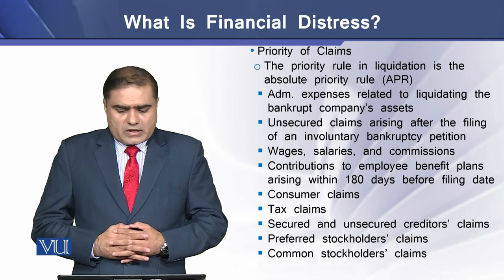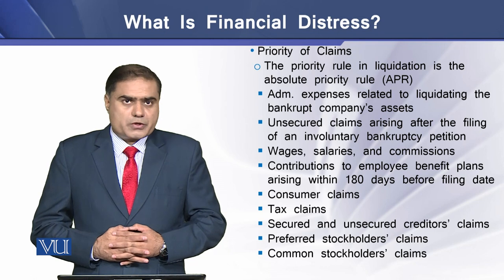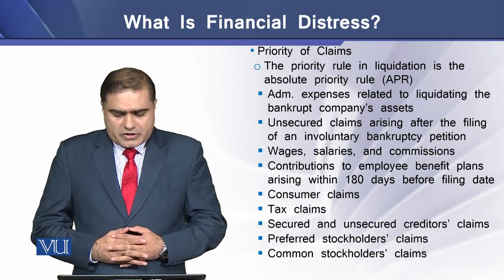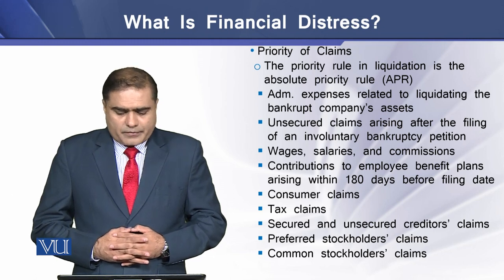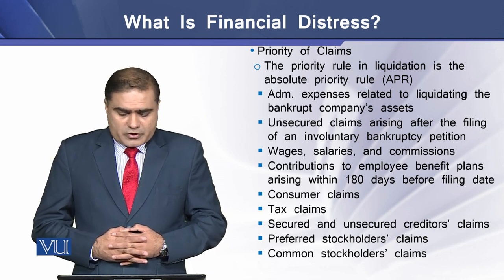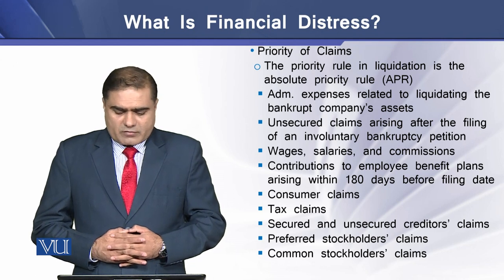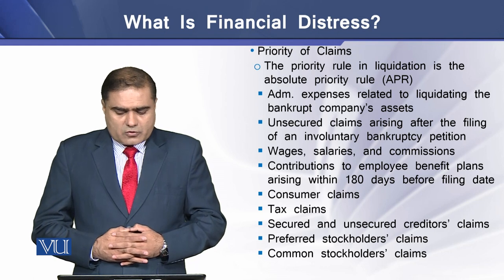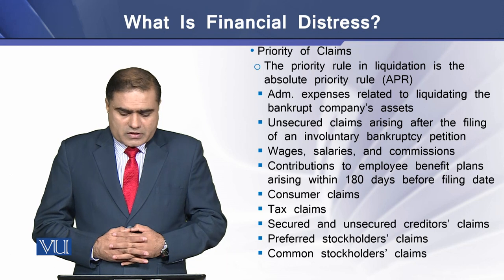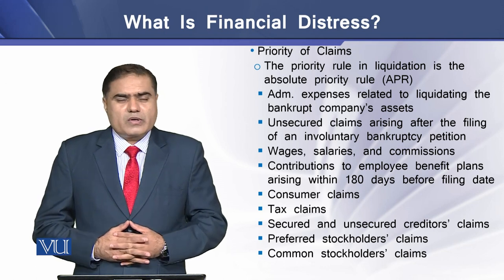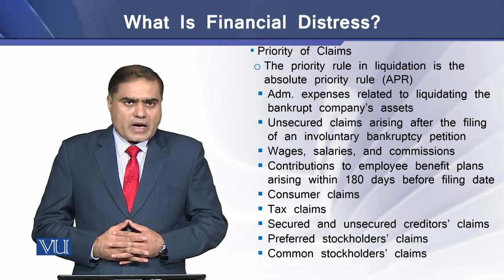This priority of claims is termed the absolute priority rule and works in a particular order: first, administrative expenses related to liquidation of the bankrupt company's assets; then unsecured claims; then unsecured claims arising after the filing of an involuntary bankruptcy petition; then wages, salaries, and commissions; then contributions to employee benefit plans arising within 180 days before the filing date; then consumer claims; then tax claims; and then secured and unsecured creditor claims. If a residual amount remains, preferred stockholders' claims are paid, including their unpaid dividends.